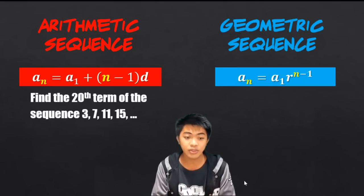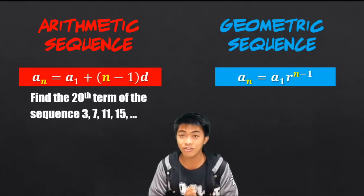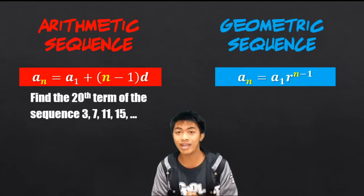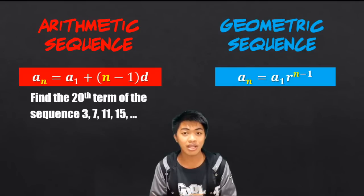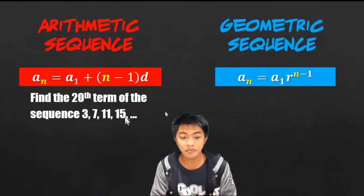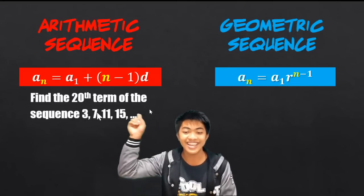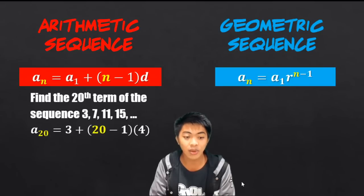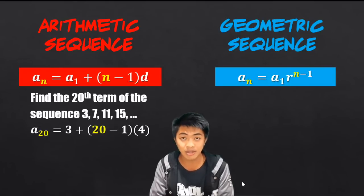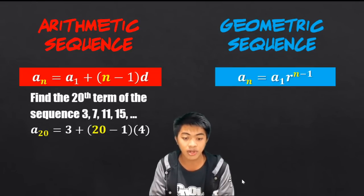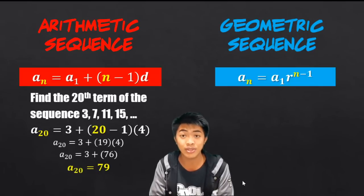Let's say we have this problem: Find the 20th term of the sequence 3, 7, 11, 15. Before substituting into the formula, first check what kind of sequence is given — it can be arithmetic or geometric. Obviously, this sequence is arithmetic because we are adding 4. So we use the arithmetic sequence formula, identify the first term and the common difference, replace n with 20, simplify, and the result is 79. So the 20th term is 79.